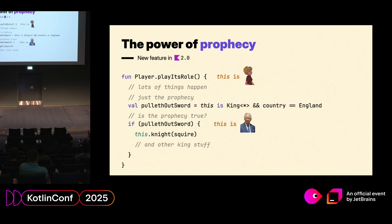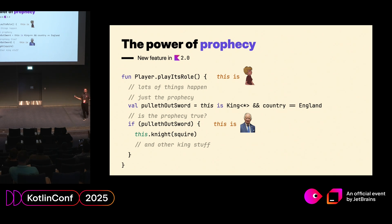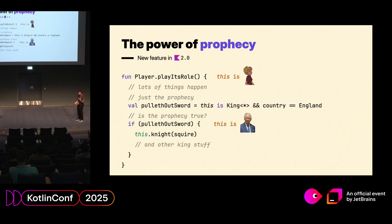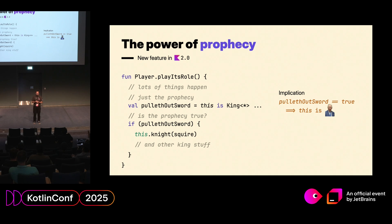So what's going on here? Something different is going on because we are checking for the type and putting this into a Boolean variable, and then checking whether this Boolean variable is true. And still, somehow, the compiler is able to deduce that inside this block Arthur is the king of England. For this, we use what I like to call prophecies — they are called implications. The compiler records not only information about branches, it also records implications about what you do with Boolean variables.